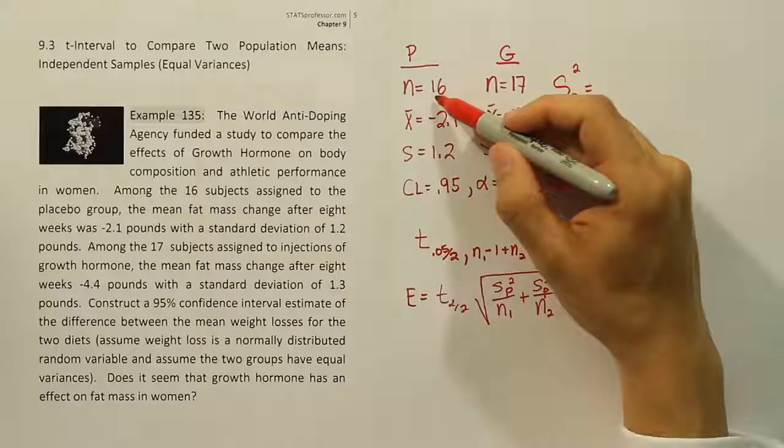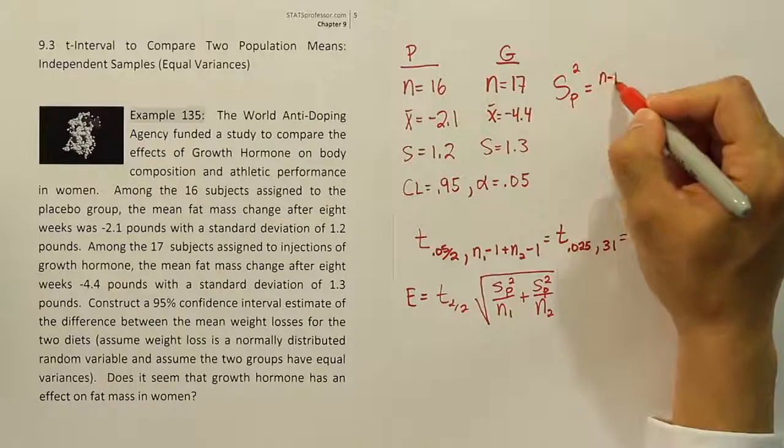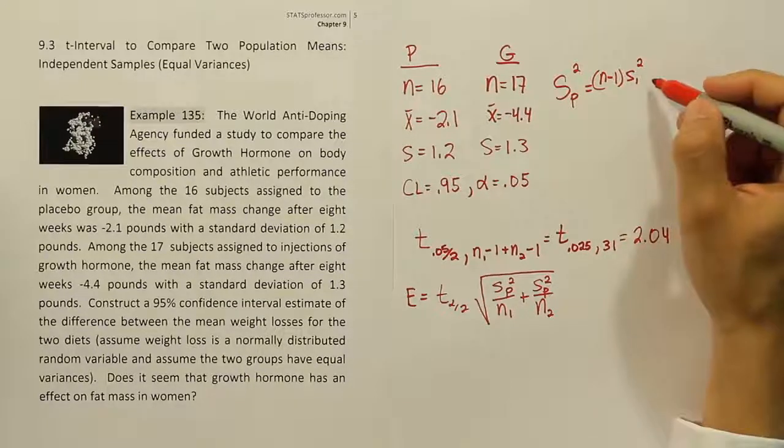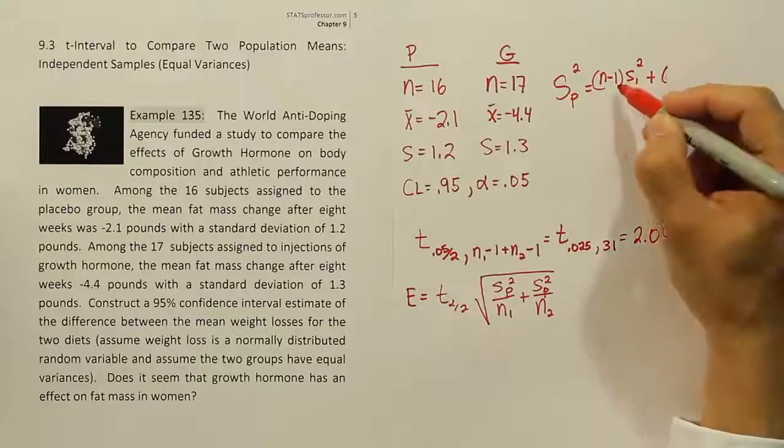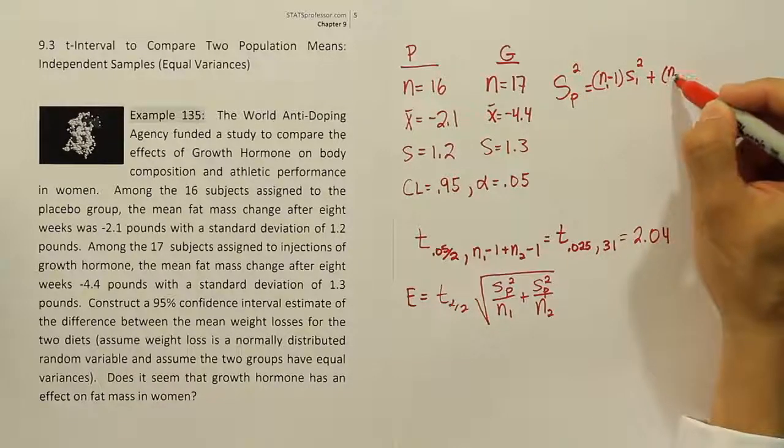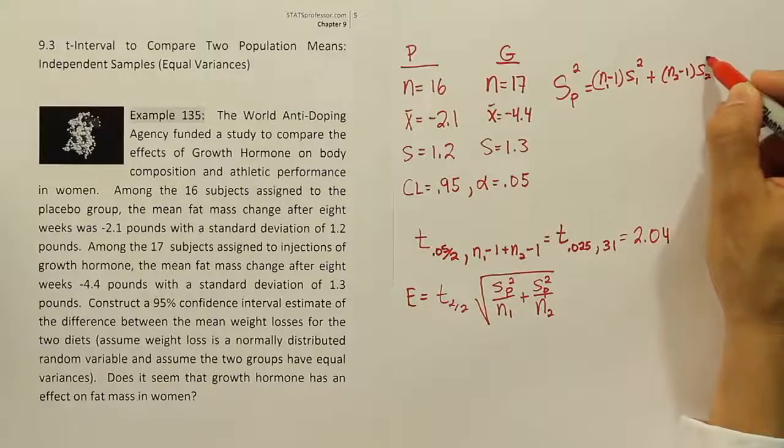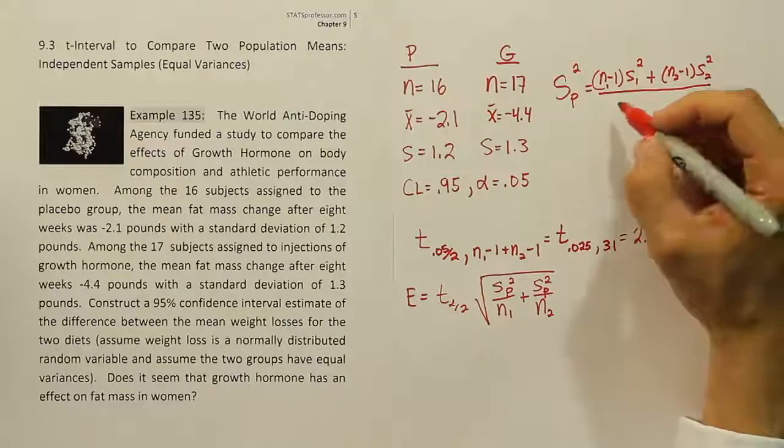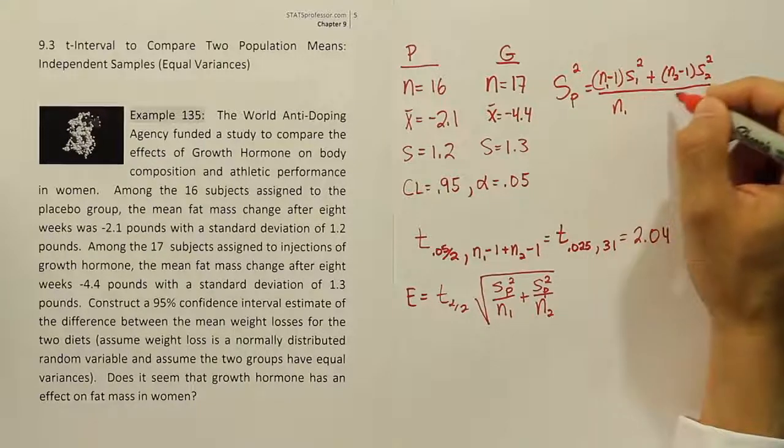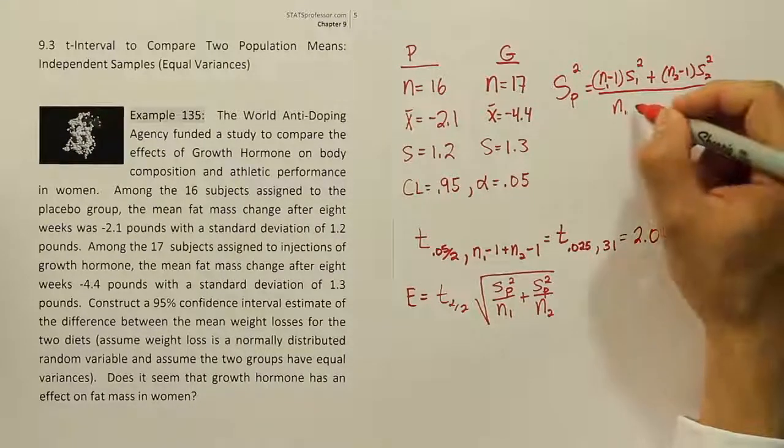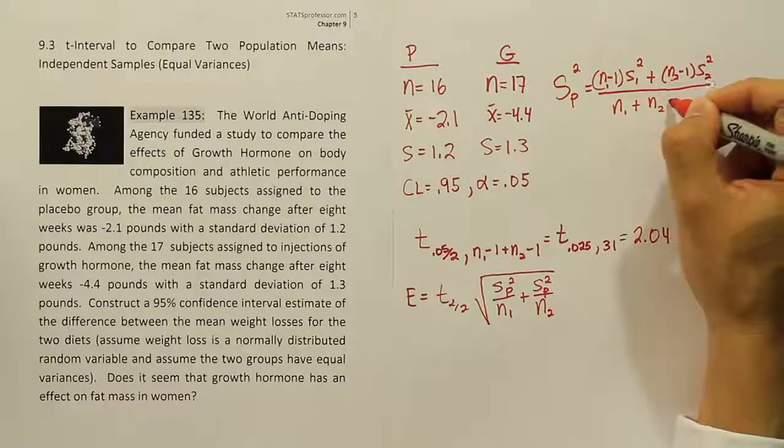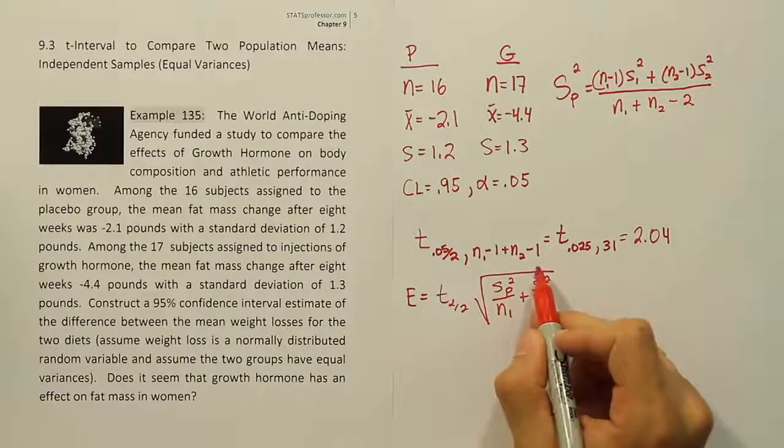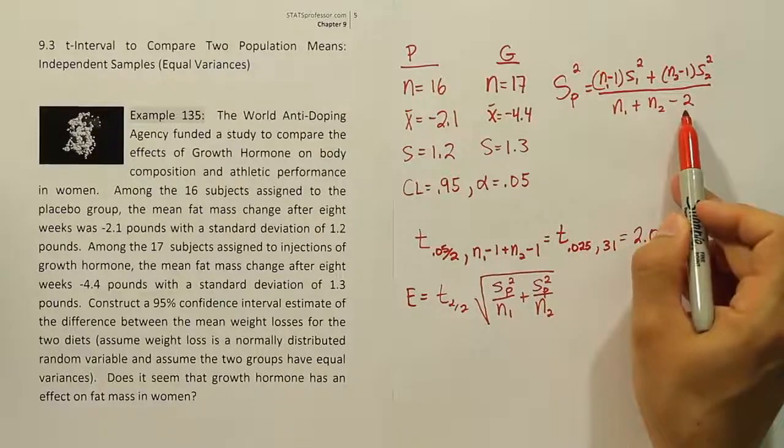So the way we're going to do this is pretty simple. We're going to take the degrees of freedom here. So it's going to be n minus 1 times the standard deviation for the first group squared. Then we're going to add to that n2 minus 1 times the standard deviation for the second group squared. And all of that will be divided by our degrees of freedom. So you can either write it as n1 minus 1 plus n2 minus 1 or you can write n1 plus n2 minus 2. That's the same as the degrees of freedom we used down here, just written in a different way.